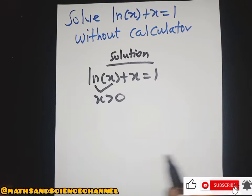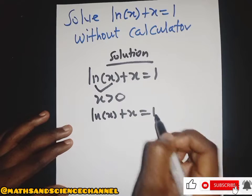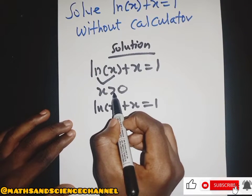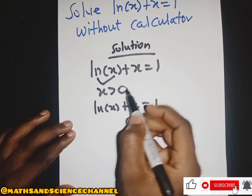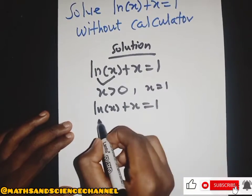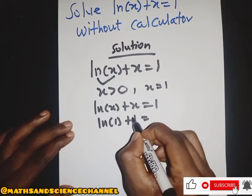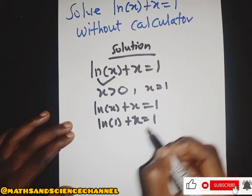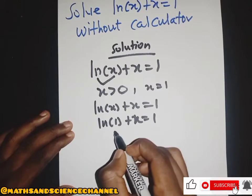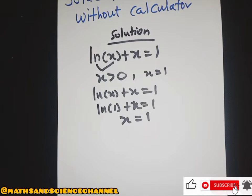From here, by simple inspection, we can have s equal to 1. So we have ln(x) + s = 1, and when s is greater than 0, we can try s = 1. When s = 1, we have ln(x) + 1 = 1, which gives ln(x) = 0, so x = 1. That is one value of x.